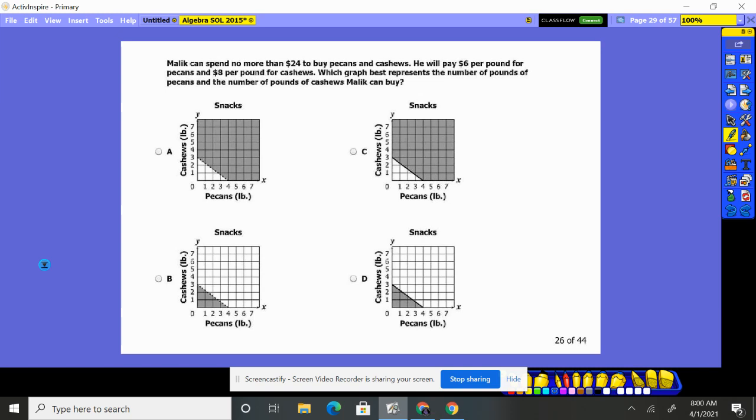Well, if we look at them, we should be able to get the answer pretty quickly. So we know he can't spend more than $24. So if you look at these graphs, this is saying he could buy it here and here. Can he really buy six pounds and all the way up to a thousand pounds? No, these graphs make no sense. It's shading saying that he can buy a whole bunch. We know he can't buy a whole bunch. He only has $24.